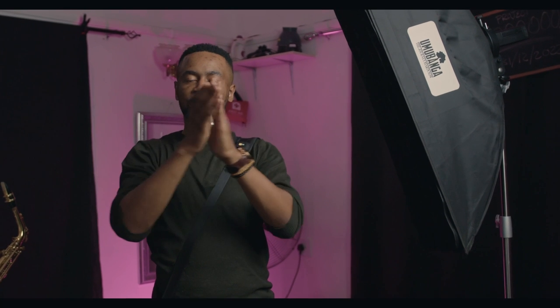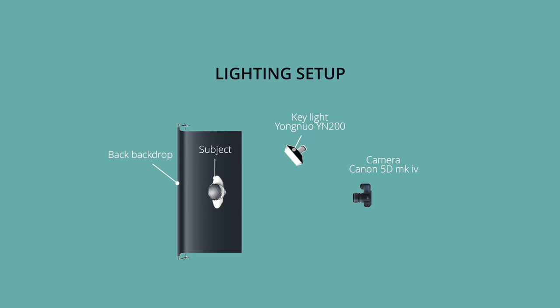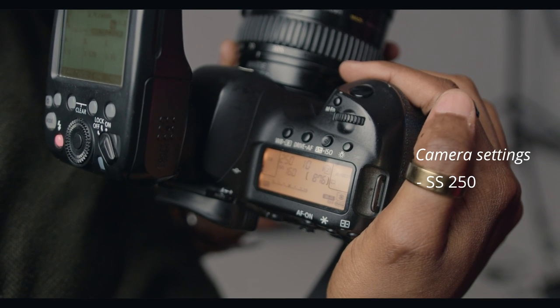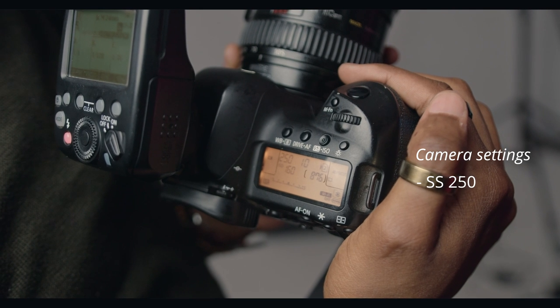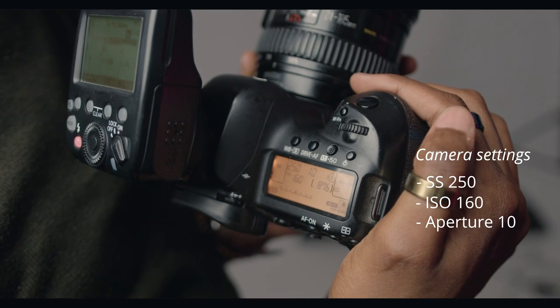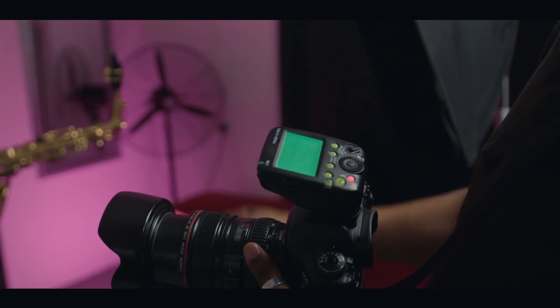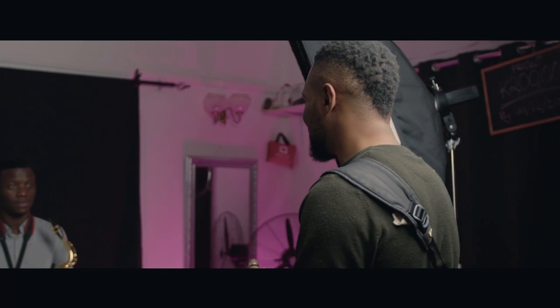the Yongnuo YN200 in a stripped softbox with a grid on it. The reason why I'm using a grid is because I want the lighting to be one directional — it shouldn't spill out to other avenues. My shutter speed is at 1/250th of a second, my ISO is at 160, my aperture is at f/10. I am shooting at half power, not full power. I think I'm good to start.